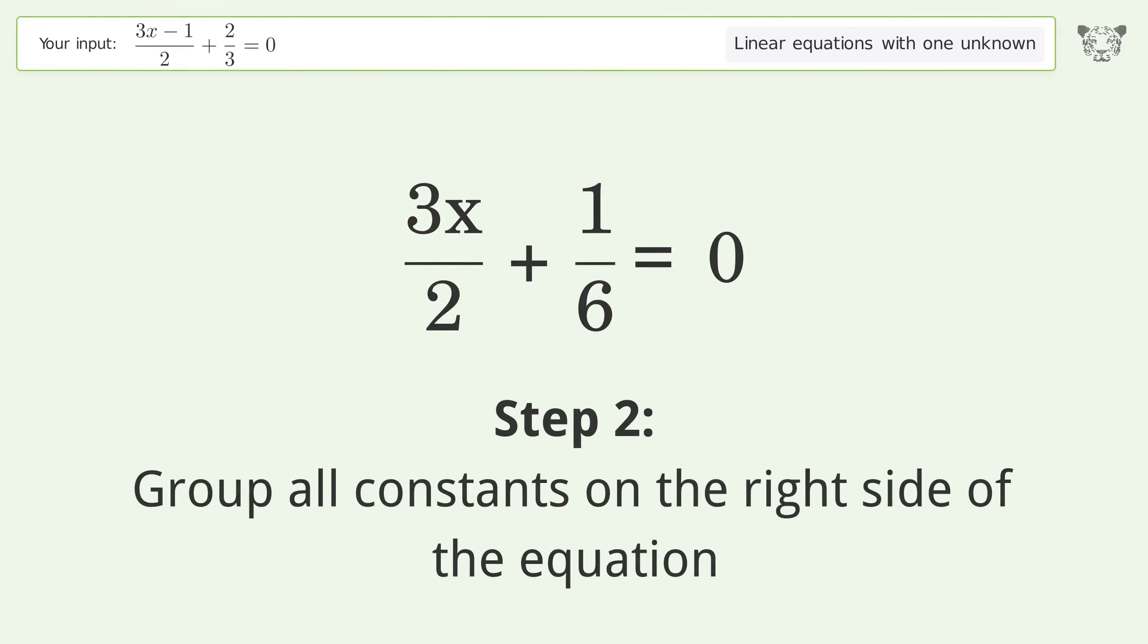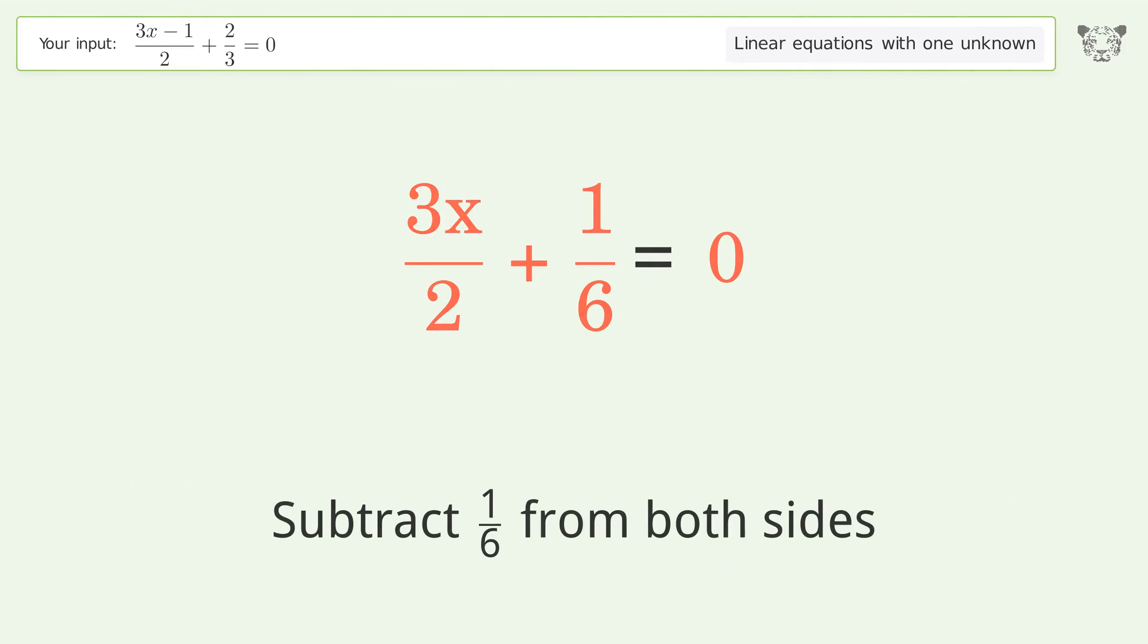Group all constants on the right side of the equation. Subtract 1 over 6 from both sides.